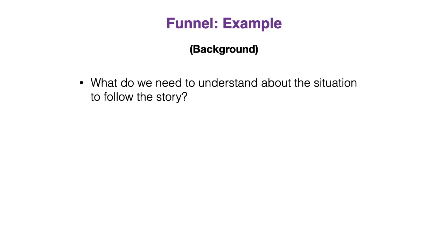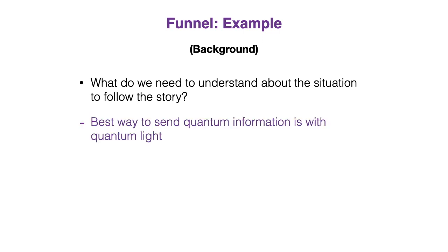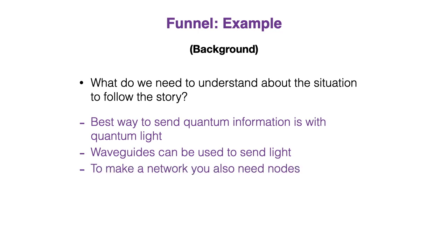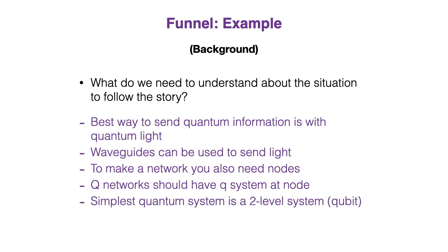Now let's look at the funnel. What do we need to understand about the situation to follow the story? We need to understand that the best way to send quantum information is with quantum light, that waveguides can be used to send light, and to make a network you also need nodes. Quantum networks should have quantum systems at the nodes, and the simplest quantum system is a two-level system, otherwise known as a qubit.